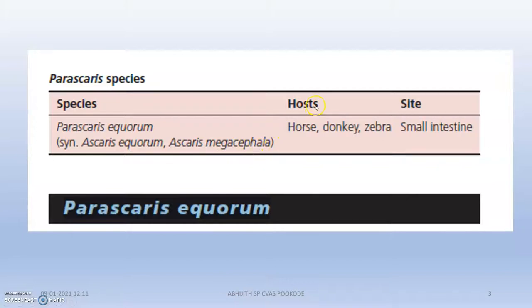The definitive hosts are horse, donkey, and zebra, and they are found mainly in the small intestine region. They bite with hooks and circi onto the mucosa, sucking blood and proteins, living there.